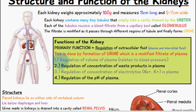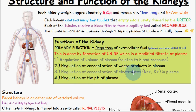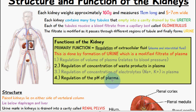Other functions of the kidneys include: regulation of the volume of plasma, which also relates to blood pressure; regulation of the concentration of waste products in the plasma; regulation of the concentration of electrolytes such as sodium ions, potassium, and carbonate ions in the plasma; and finally, regulation of the pH of plasma.